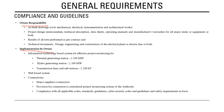A second important owner responsibility is IT-based project monitoring during implementation. This is applicable for thermal units of 250 MW and above, hydro of 100 MW and above, and transmission lines and substations of 220 kV and above. The web-based system should have connectivity with major suppliers and contractors to track progress, and should also connect with the centralized project monitoring system of the CEA. It should be used for monitoring compliance with applicable codes, standards, cybersecurity codes, and safety requirements.